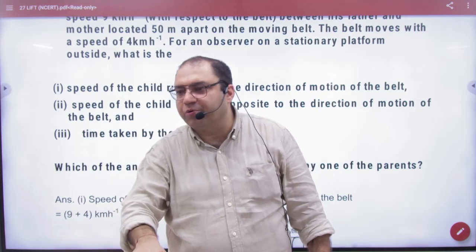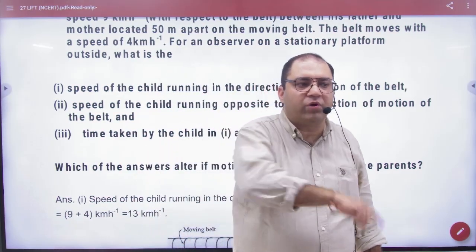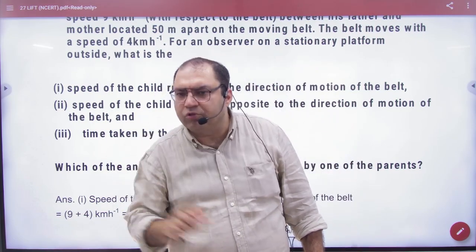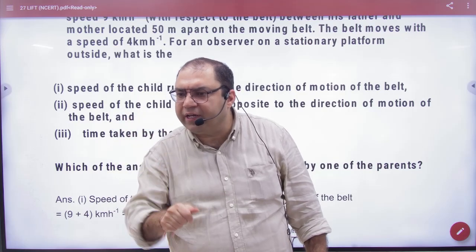You can say that the child's speed is 9 plus 4, or 9 minus 4. You are saying this because you are on the ground. You ask the child his speed, how much is your speed? He will say that it is 9.